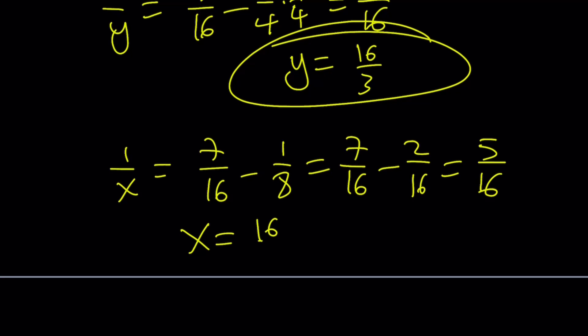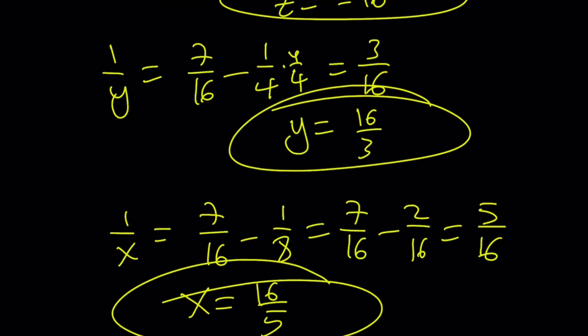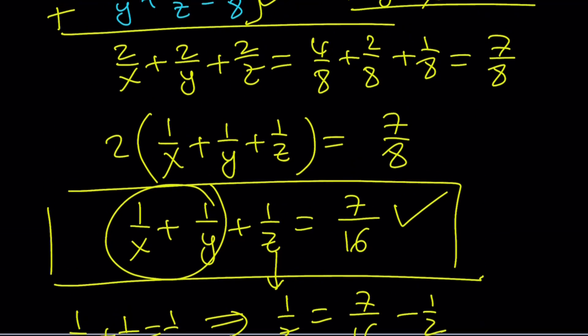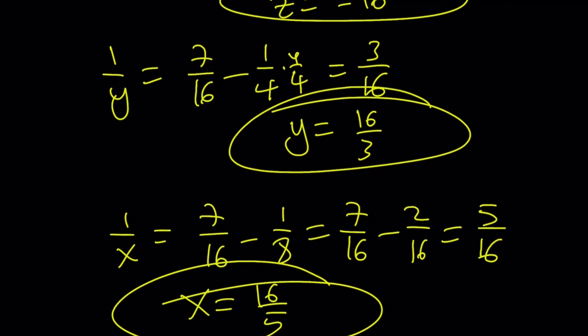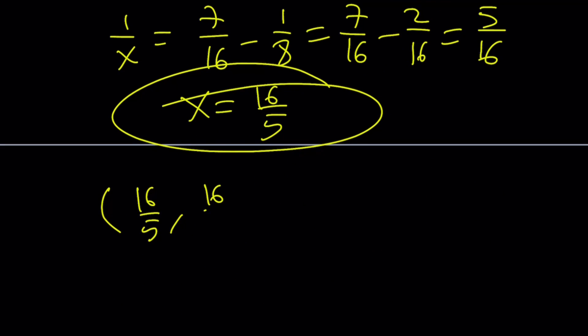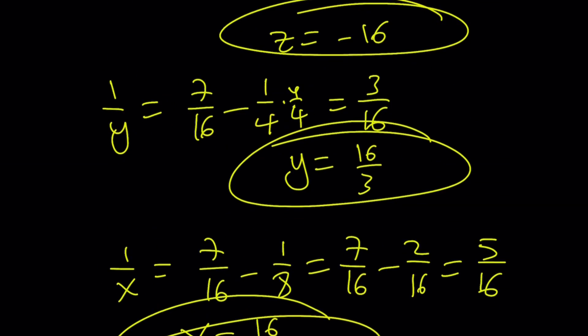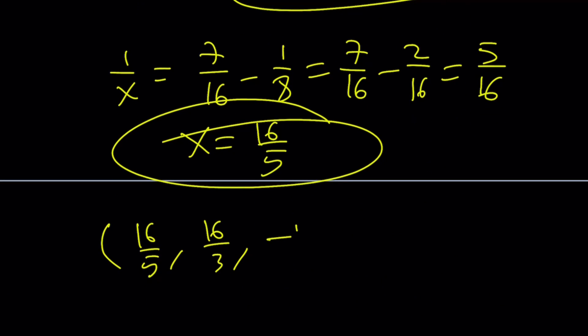And there's only one solution because we can't find any other solutions, so that's going to basically give us all the number values. So, let's go ahead and write it as an ordered triple, sixteen over five, sixteen over three, and for z, we got negative sixteen.